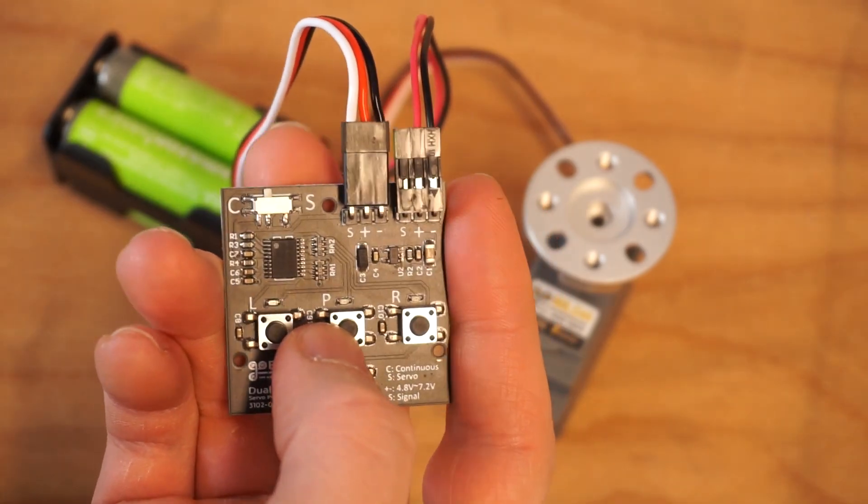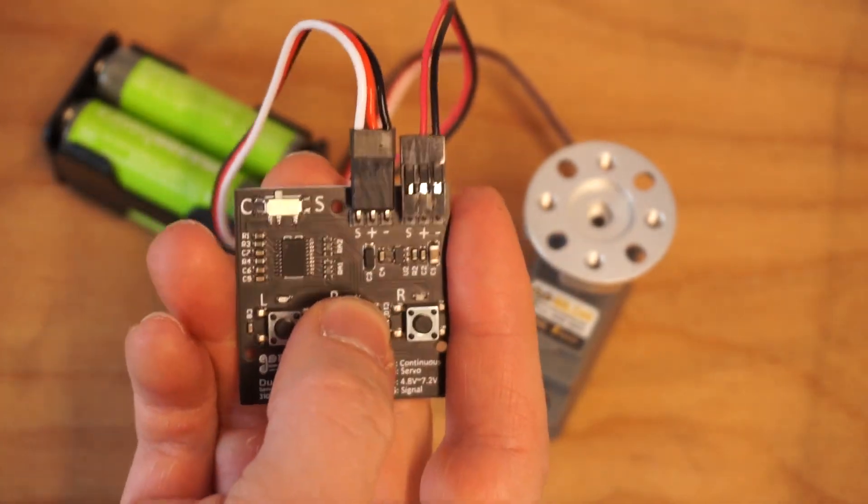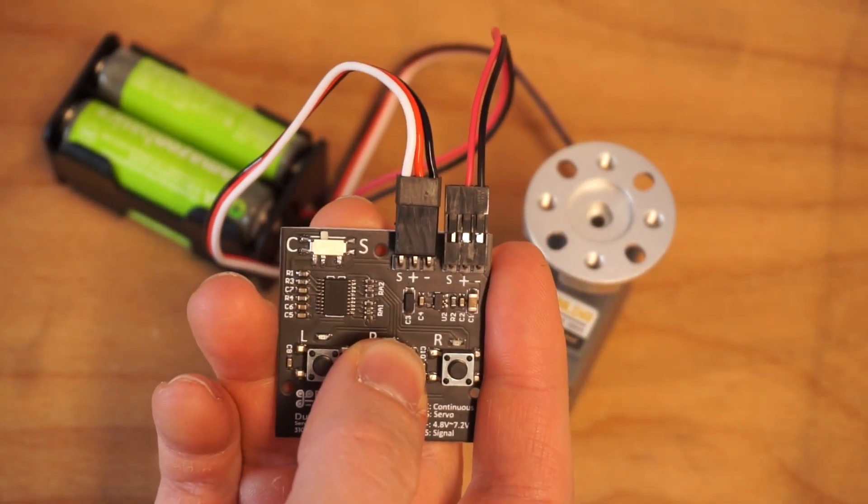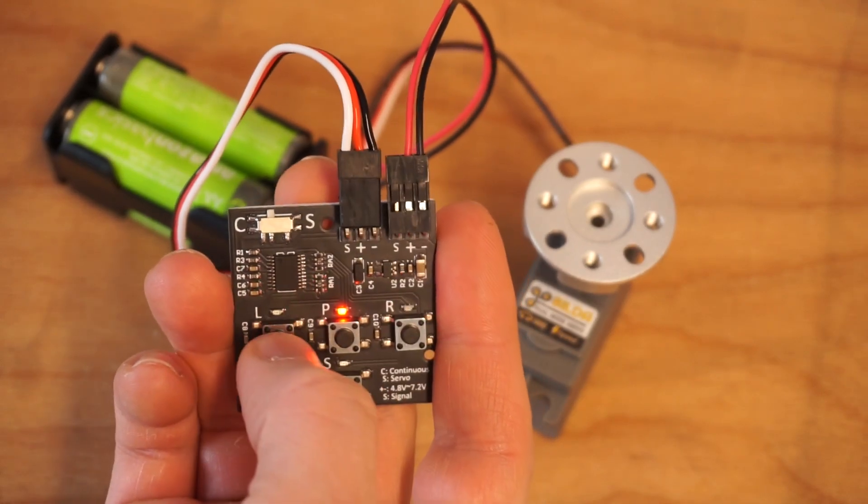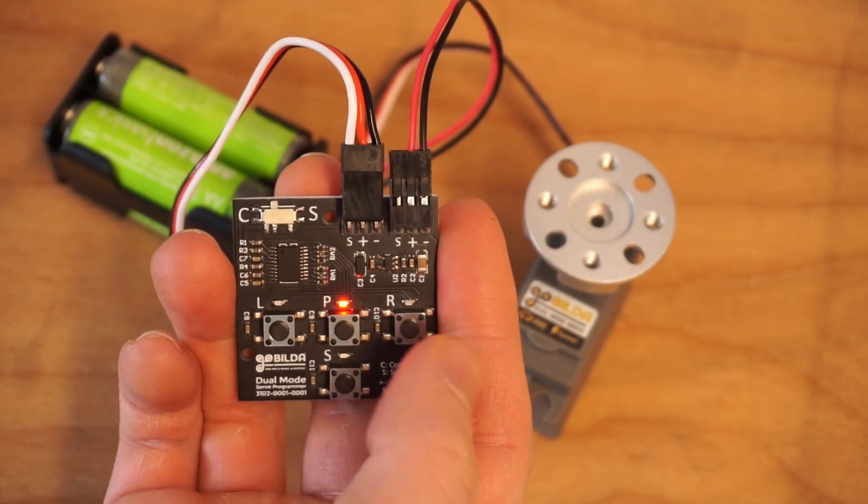To program it, you're going to push and hold the letter P for about 5 seconds. After you count to 5, let go. You should see three flashes and you're ready to program.